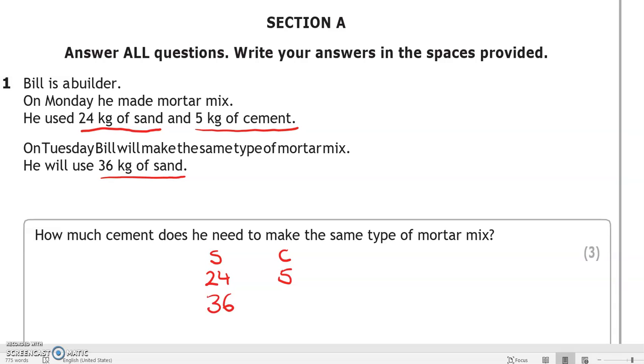So as we've said before, in a ratio question, you need to use proportion. So this amount will grow in proportion and this amount will grow in proportion. So whatever you multiply 24 by to get 36, you're going to use that same number to multiply 5 by to get this number here, which is the amount of cement, which is what we're looking for.